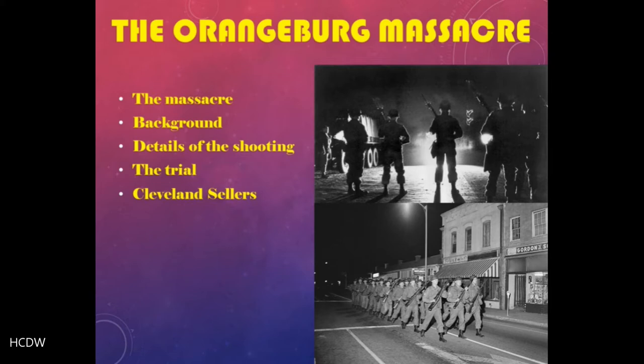The shooting represented the culmination of two days of activism in the Orangeburg community as African Americans, primarily students at the couple of historically black colleges in the city, attempted to desegregate the local bowling alley and other institutions. But it also represented in some ways the culmination of the civil rights struggle that had been ongoing throughout the 50s and 60s, and had been growing more militant in the years of the middle to late 1960s.